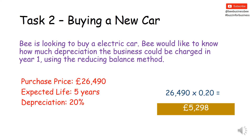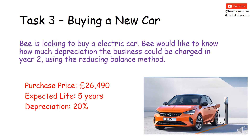So let's have a look at task three. Task three is just like we had before, only this time B wants to know what the year two depreciation amount is going to be based on the reducing balance method. So what you just used a minute ago but this time year two. You've got the purchase price, expected life and depreciation rate on screen. You've also got your data from task two that you'll be needing to use. Pause the video while you undertake the calculation to work out the depreciation for year two.